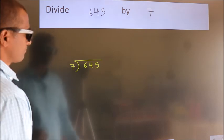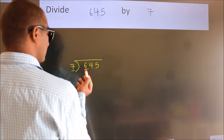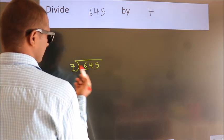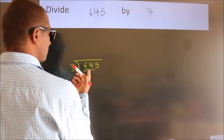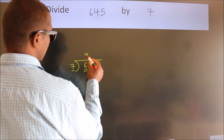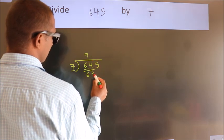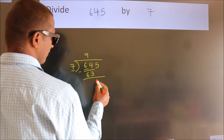Here we have 6, and here 7. 6 is smaller than 7, so we should take two numbers: 64. A number close to 64 in the 7 table is 7 nines, 63. Now we should subtract. We get 1.